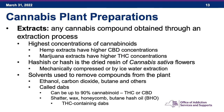Another plant preparation from cannabis is extracts — any cannabis compound obtained through an extraction process — which have the highest concentrations of cannabinoids. Hemp extracts have higher CBD concentrations; extracts from marijuana have higher THC concentrations. Hashish is the dried resin of the cannabis sativa flowers, produced by mechanically pressing or by ice water extraction. Solvents such as ethanol, carbon dioxide, and butane are now used to remove compounds from the plant, and those extracts are called DABs — which can be up to 90% cannabinoids.